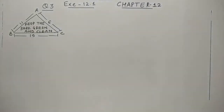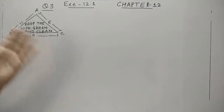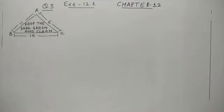Let us continue with question number 3 of exercise 12.1. It is given that there is a slide in a park. One of its sidewalls has been painted in some color with the message 'keep the park green and clean.' The sidewalls are given the measures 15, 11, and 6 meters respectively. Find the area of the painted color.